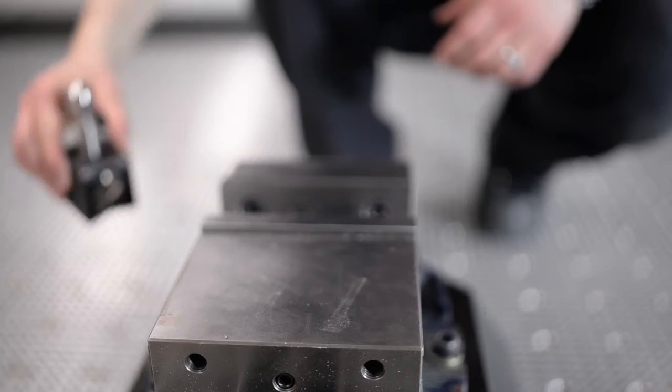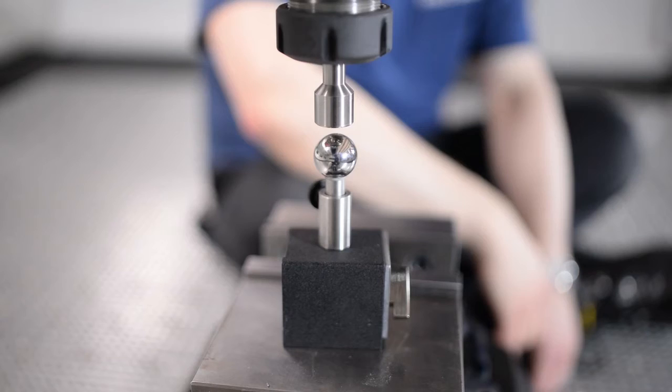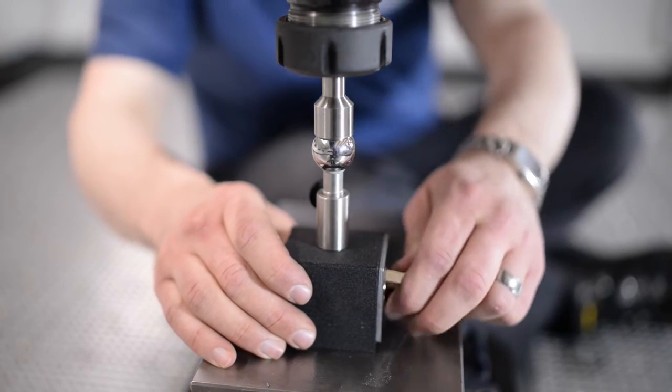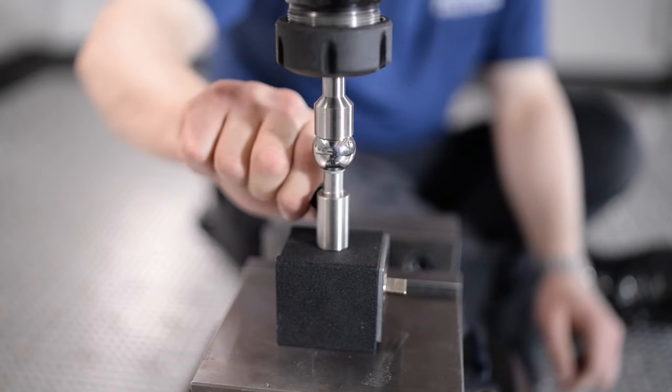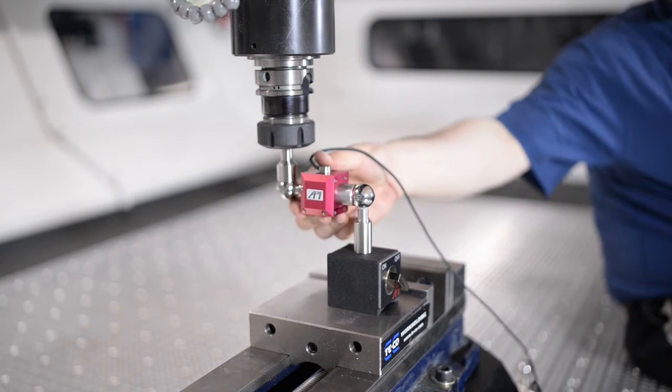To start, mount the magnetic socket in the spindle. Next, place the center pivot on the bed, but don't lock it in quite yet. Now mate the two parts and lock the center pivot in its place.